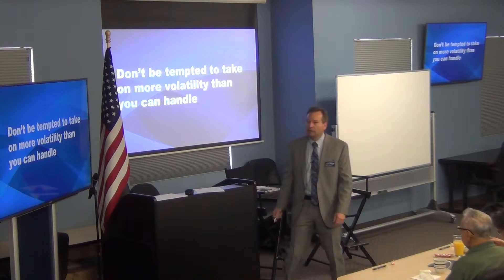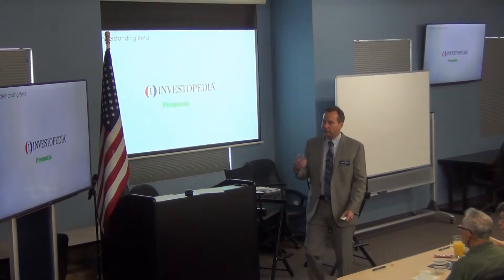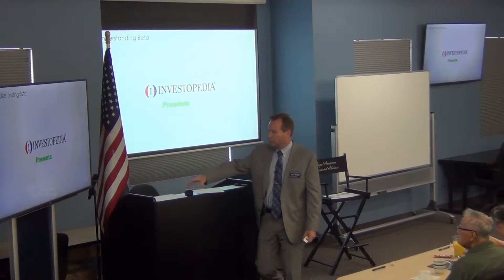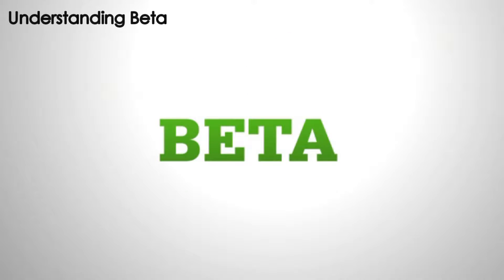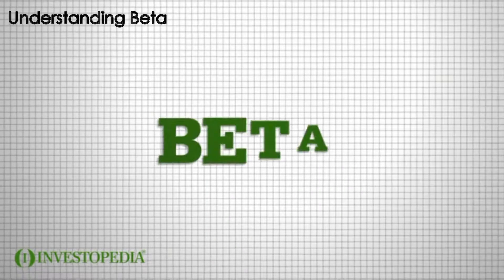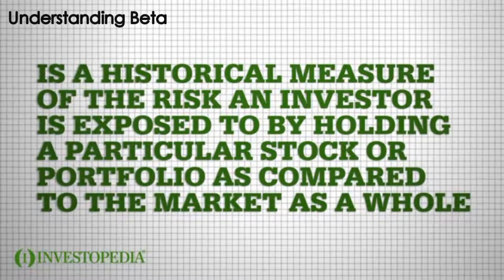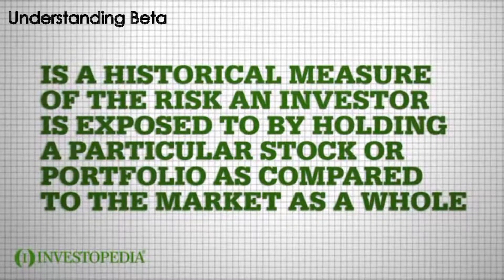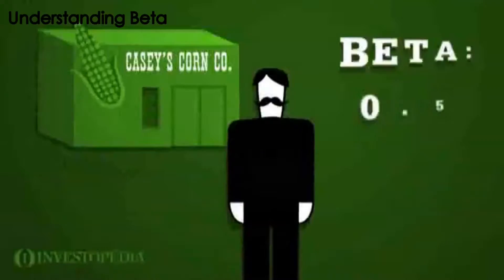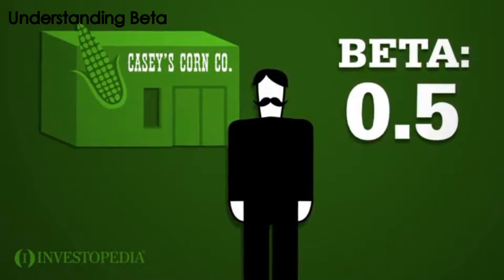Right now we're experiencing upside volatility, but we have these classes when we experience downside volatility. We're going to watch this first video on understanding beta — it's a really good explanation. Beta is a historical measure of the risk an investor is exposed to by holding a particular stock or portfolio, as compared to the market as a whole.